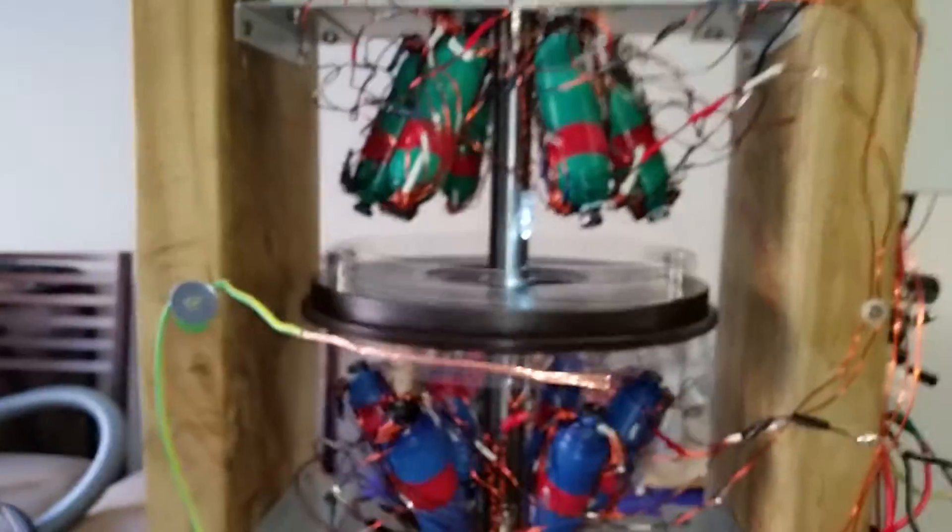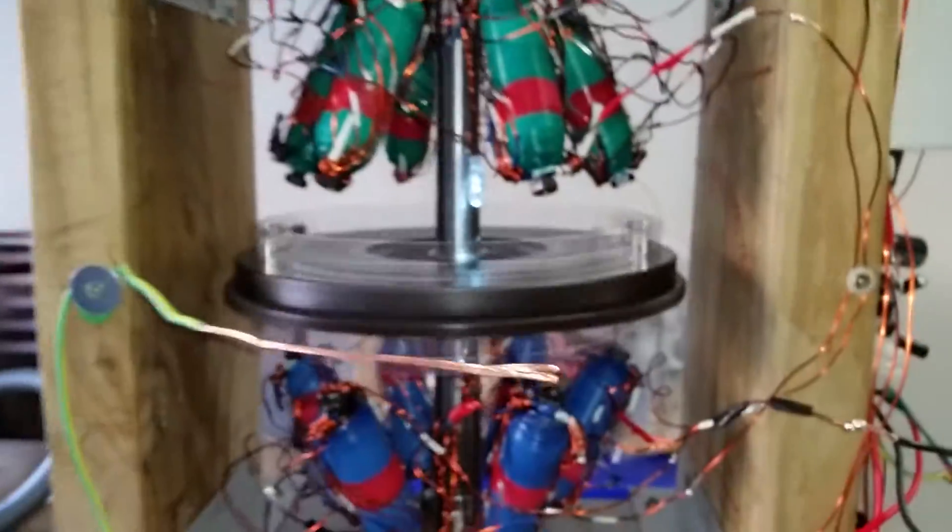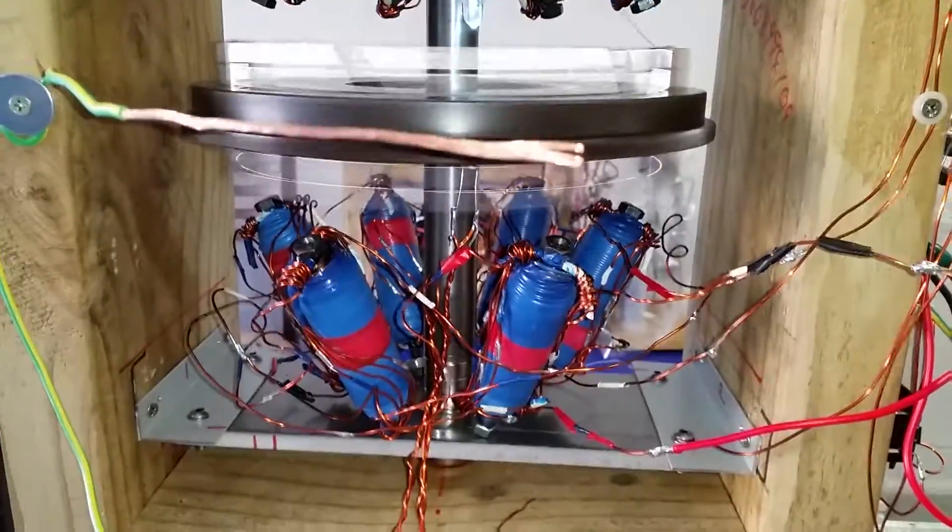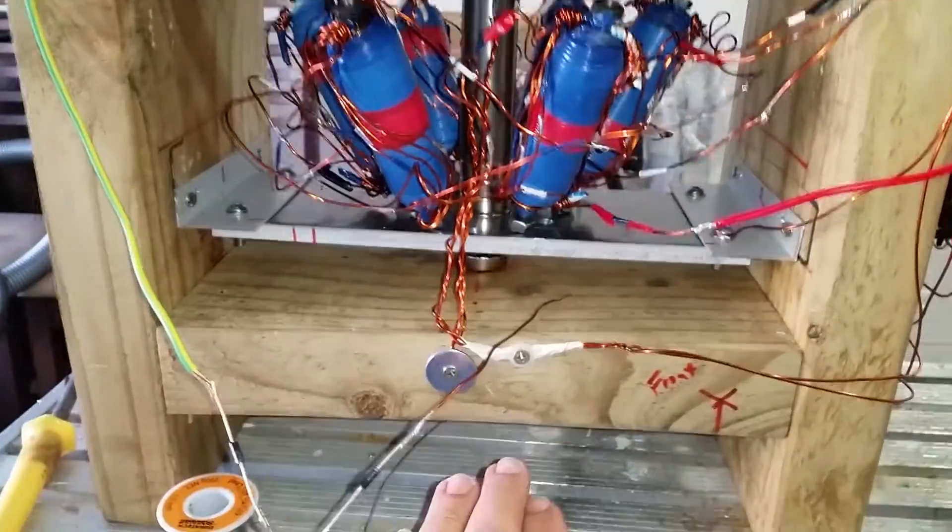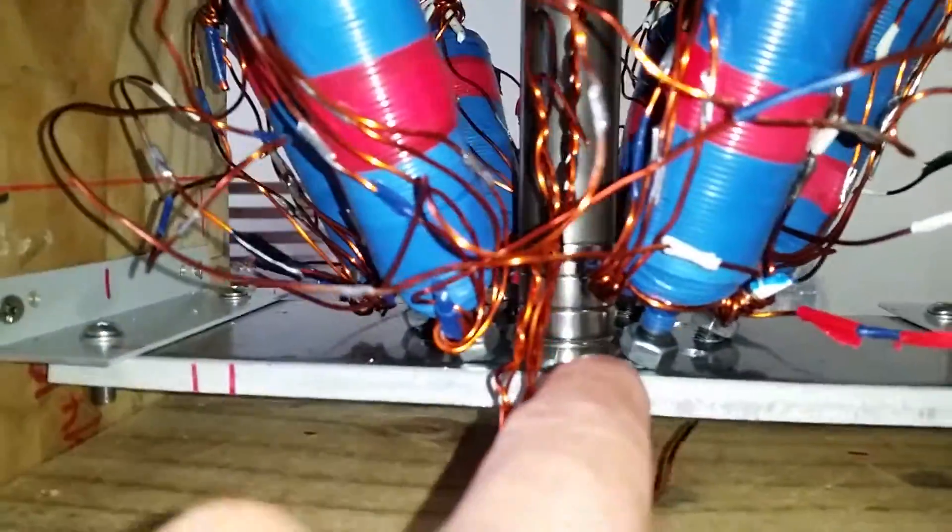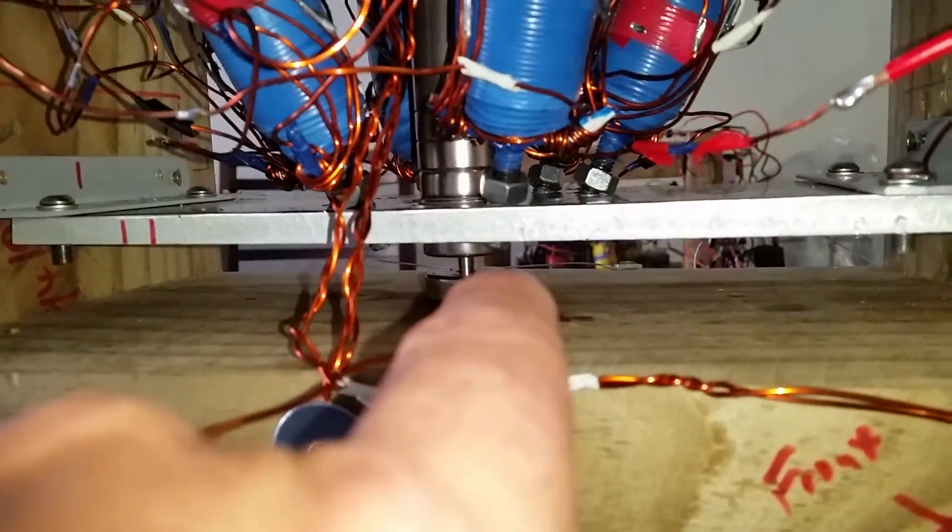Here we have magnets on the bottom with polarity up-down, north at the top, south at the bottom. You can see the magnets on the bottom of the steel rod, and it's floating on a magnet at the bottom.